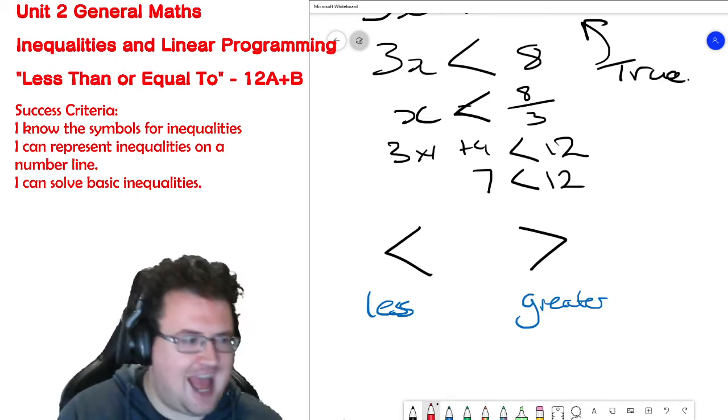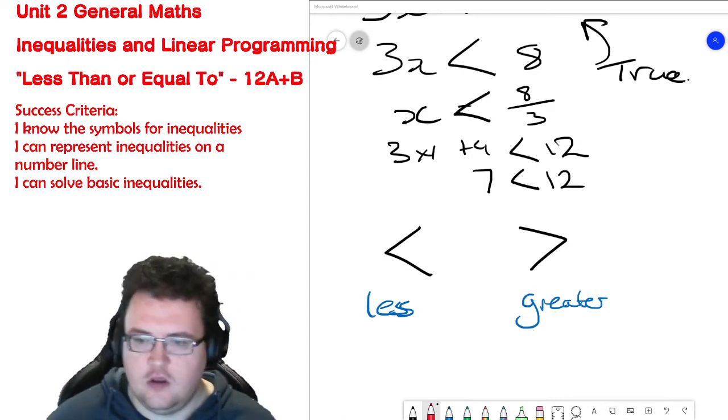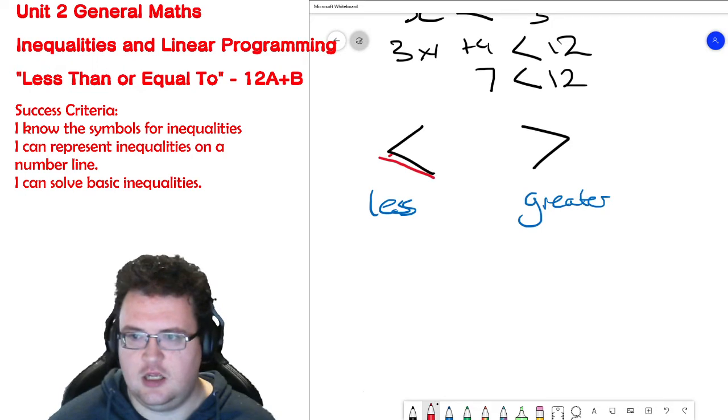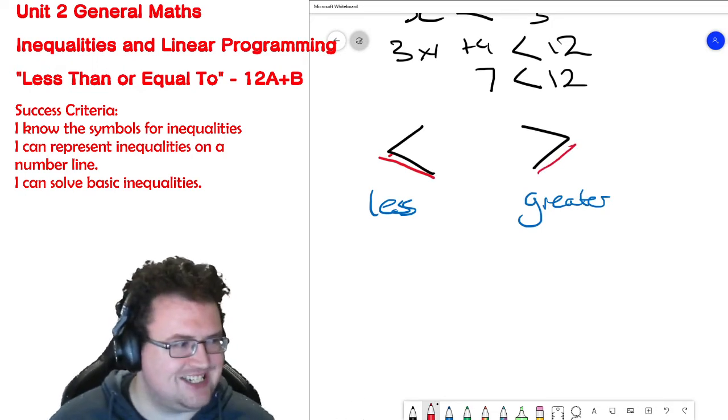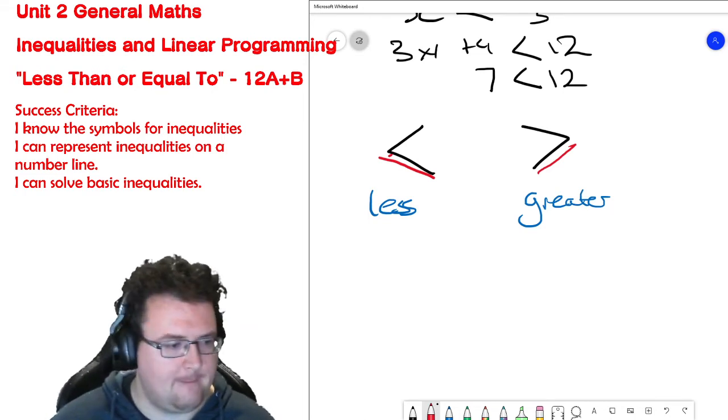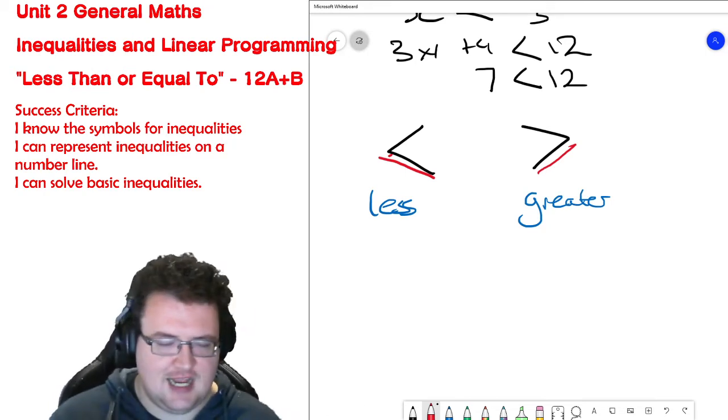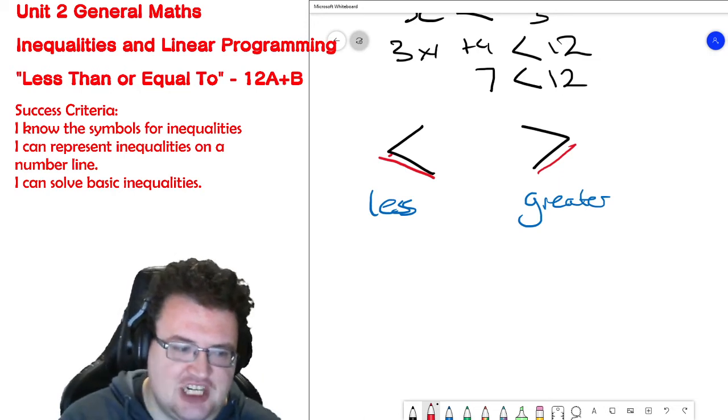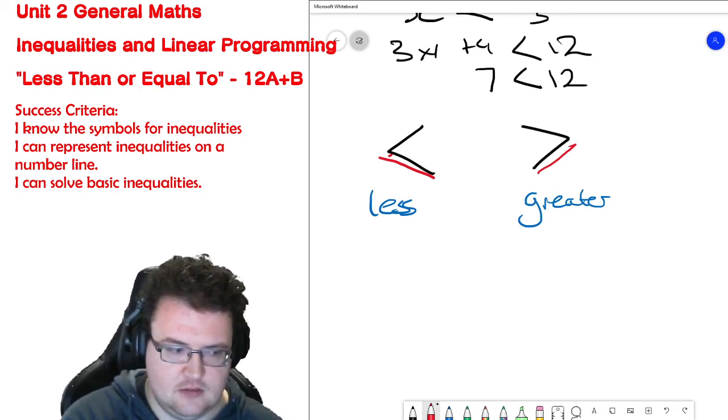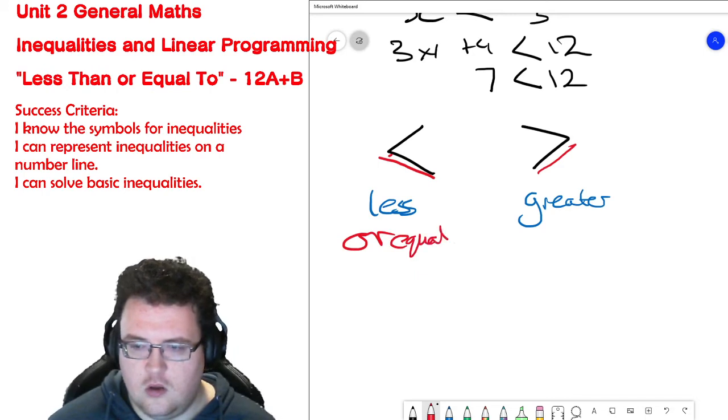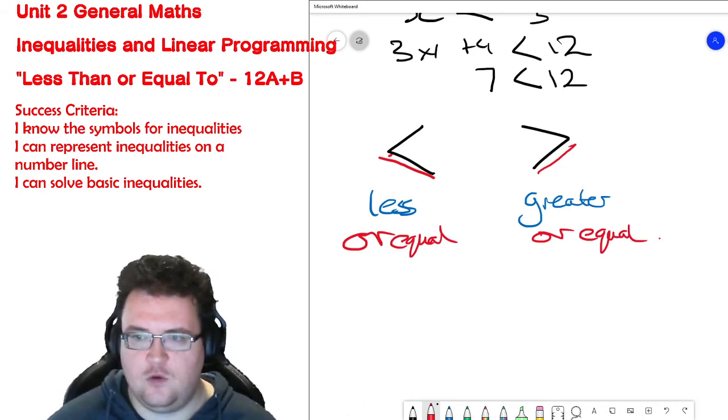What happens if I add an extra line to each of these? What does that change the meaning to? Is that equal to instead of what it previously meant, or is it equal to in addition to what it previously meant? In addition, correct. So this is less than or equal, greater or equal.